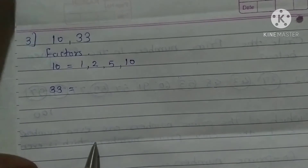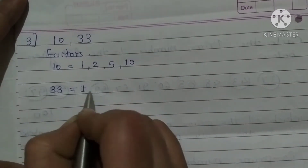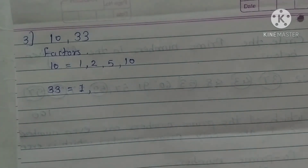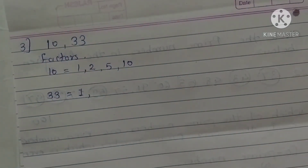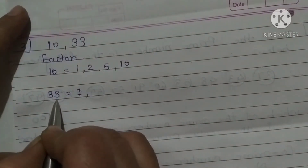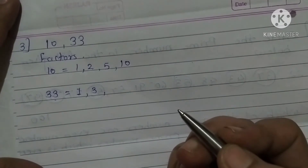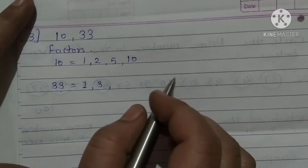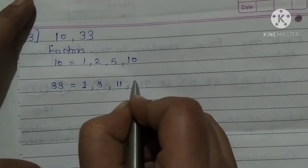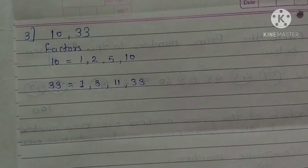Next one, 33. Start with factor 1. Is 33 divisible by 2? No. Then 3 — yes, as the digit sum shows it is divisible by 3. In any other table, find it — 33 is in the 11 table. And the last one is 33 itself. So these are the factors of 33: 1, 3, 11, 33.